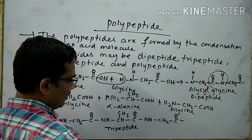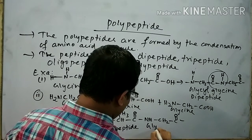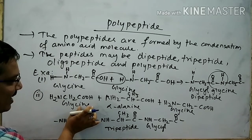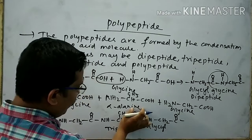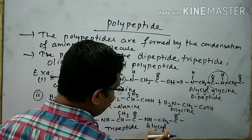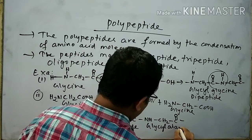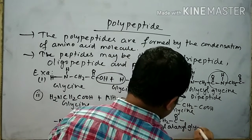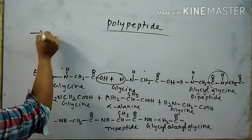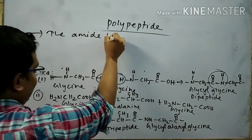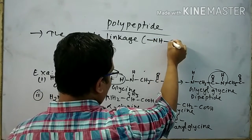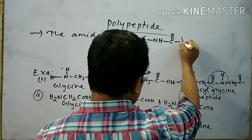Take another example. Suppose I will take one glycine molecule, another is alpha-alanine — the structure of alpha-alanine is like this — and take another glycine molecule. So here three amino acids are taken.